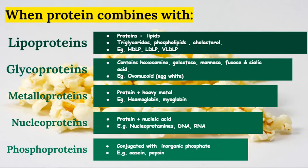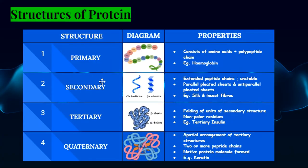Next, we have the structure of proteins. On the basis of structure, proteins are divided into four types: primary, secondary, tertiary, and quaternary, as you can see in the diagram. The primary structure consists of amino acids sequenced along polypeptide chains, joined by peptide bonds. An example is hemoglobin.